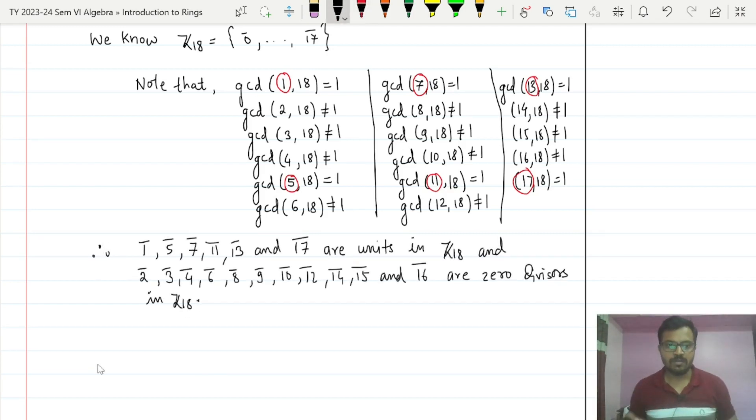So that is all for this. Now I will give one problem for homework. Just find all units and zero divisors of Z5.